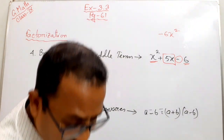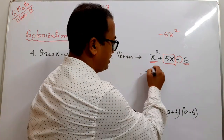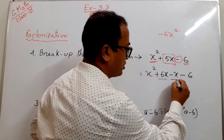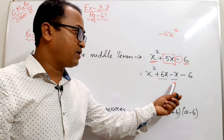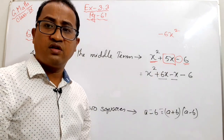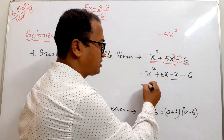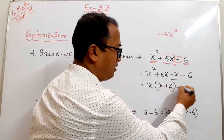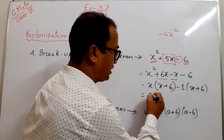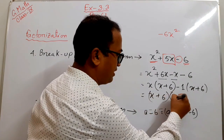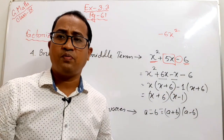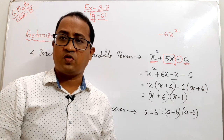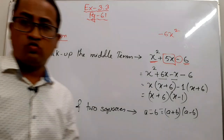So the expression becomes x² + 6x − x − 6. Taking x common from the first two terms: x(x + 6). Taking −1 common from the last two terms: −1(x − 6) — actually −1(x + 6) is not right; from −x − 6 we take −1 to get −1(x + 6). Ultimately we get (x + 6)(x − 1). This is the method of middle term breaking.